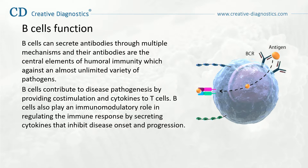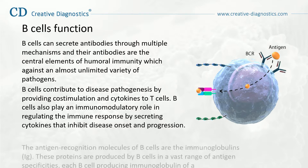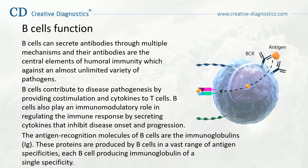The antigen recognition molecules of B-cells are the immunoglobulins. These proteins are produced by B-cells in a vast range of antigen specificities, with each B-cell producing immunoglobulin of a single specificity.